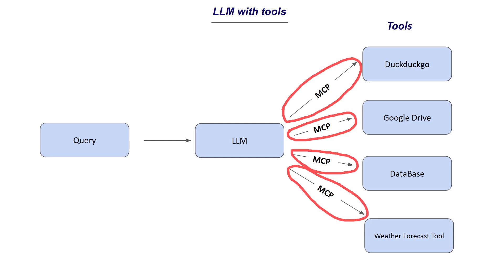This is why people compare MCP to USB-C. Think about connecting a laptop to a hard disk drive, an SSD, an Android phone, or an iPhone. Previously, iPhone had a Lightning cable, requiring a different port; Android had USB-C; SSDs had their own port — all these inconsistencies. Now with a single USB-C connector, you can connect to all of them. Similarly, the tools and knowledge bases can be anything, but all of them can be connected with a standard way of communication. MCP is simply a standard way for an LLM to communicate with tools and knowledge bases.